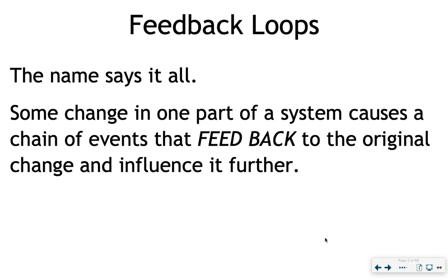Why do we use that phrase feedback loops? Really in this case, you can say the name says it all. Feedback loops occur in systems, whatever that system may be, in systems that have many components — at least two components that influence one another, but oftentimes many more than that. An initial change in one of those components triggers changes in other components of that system, which then in turn come back to influence the initial change. If you have that return back to that initial component, you have yourself a feedback loop.